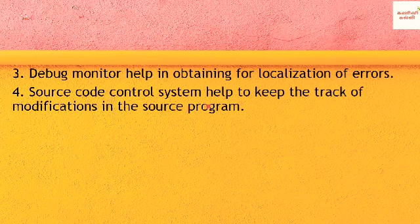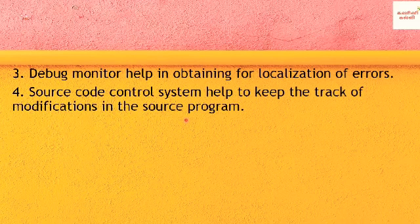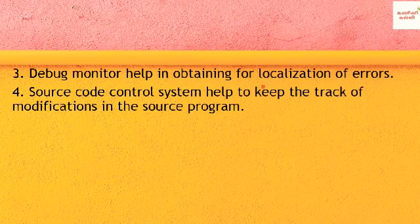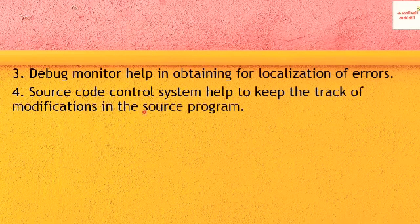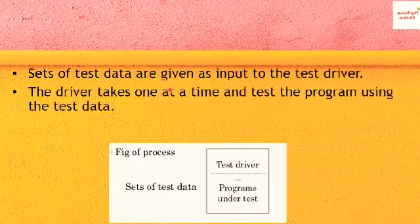The source code control system helps to keep track of modifications in the source program. Using the source code control system, we track source program modifications. That is testing and debugging.